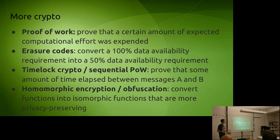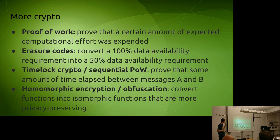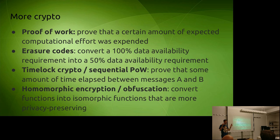We also have proof-of-work, which is a cryptographic tool for proving that you have access to a certain expected amount of computational effort — on average, a certain amount of computational effort was expended to create it. Erasure codes convert a 100% data availability requirement into a 50% data availability requirement. For example, if you have one gigabyte of data, you can use an erasure coding algorithm, turn it into two gigabytes, and any one gigabyte out of those two — even made up of tiny different chunks spliced together from all over the file — can be used to recover the original data.